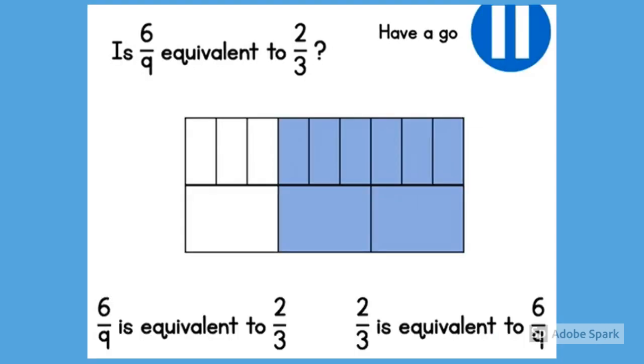Remember the bar models are the same size. So let's compare the two bar models by putting them next to each other. We can see that both bar models are equivalent. They are the same. So we can say that six-ninths is equivalent to two-thirds. Or two-thirds is equivalent to six-ninths.